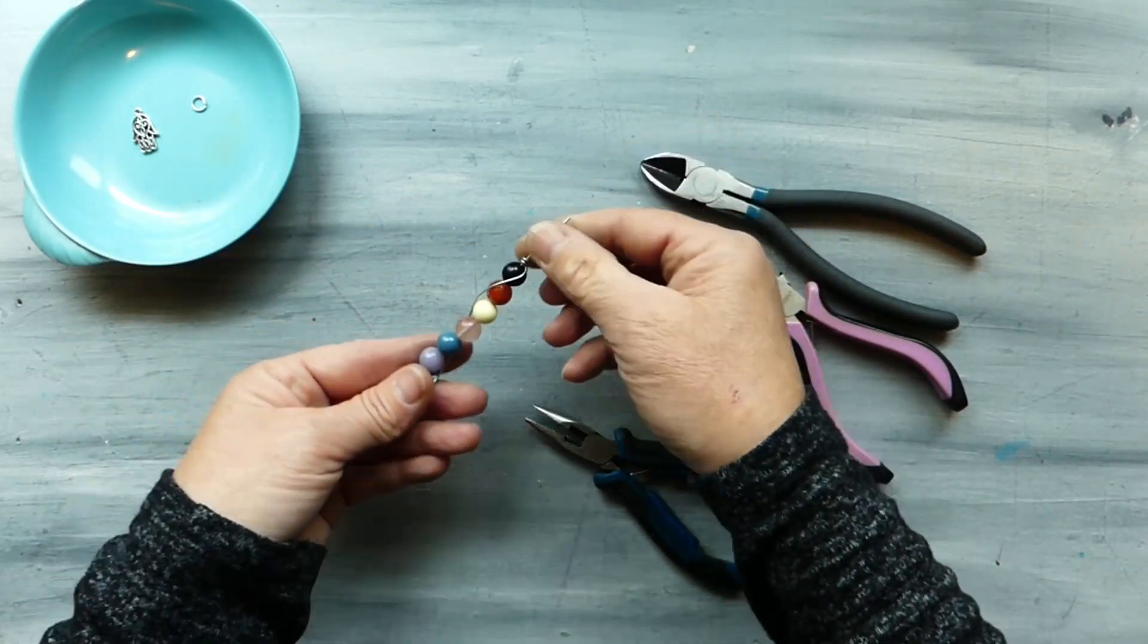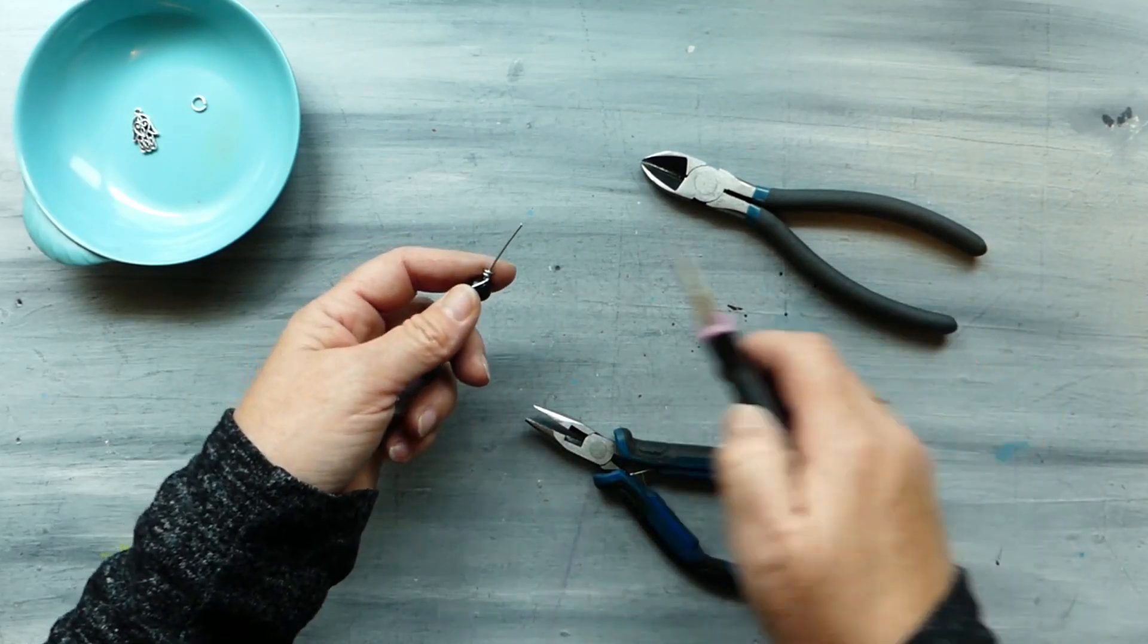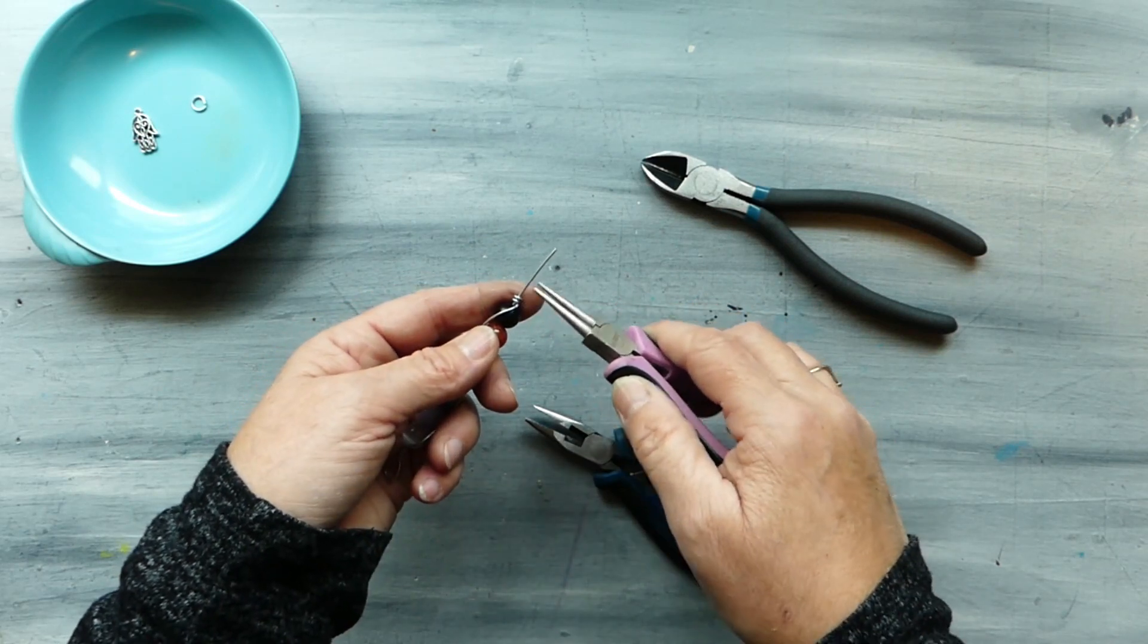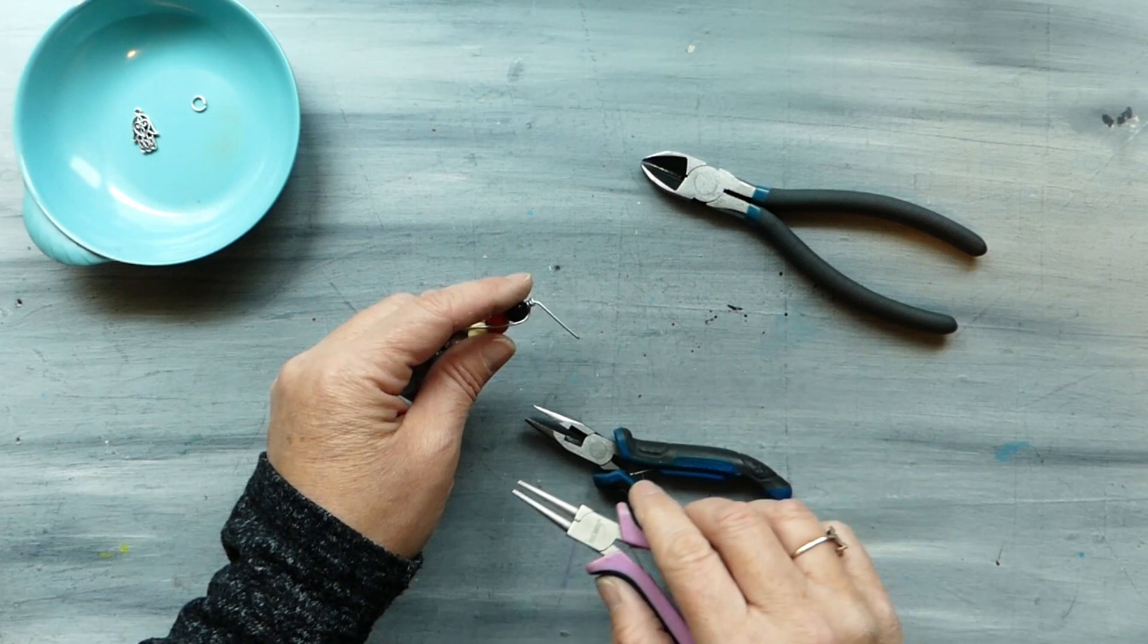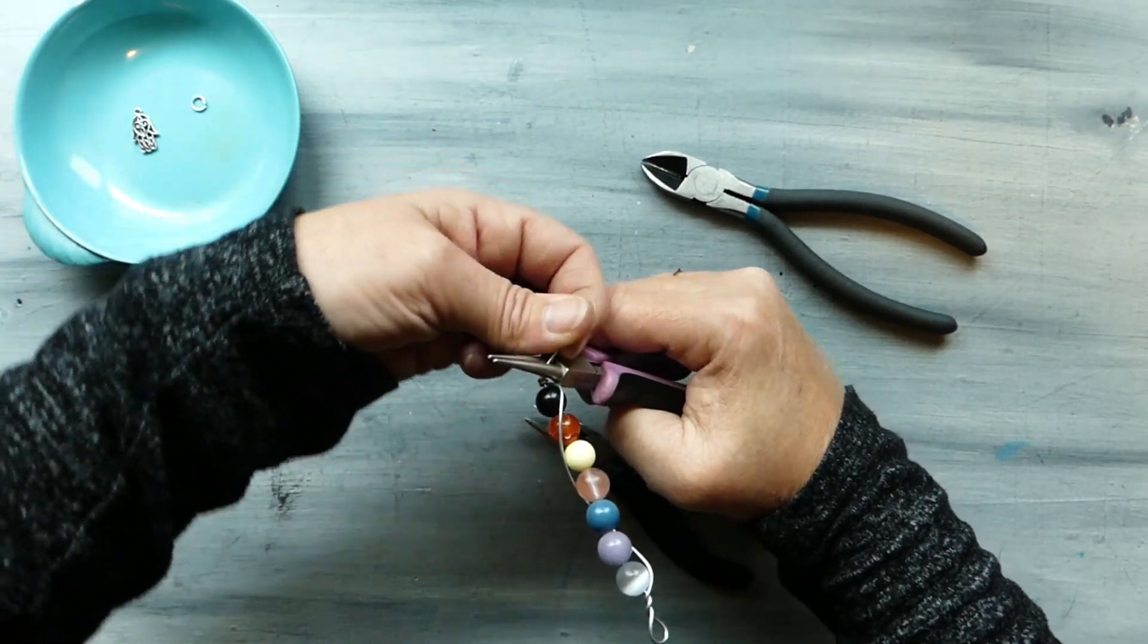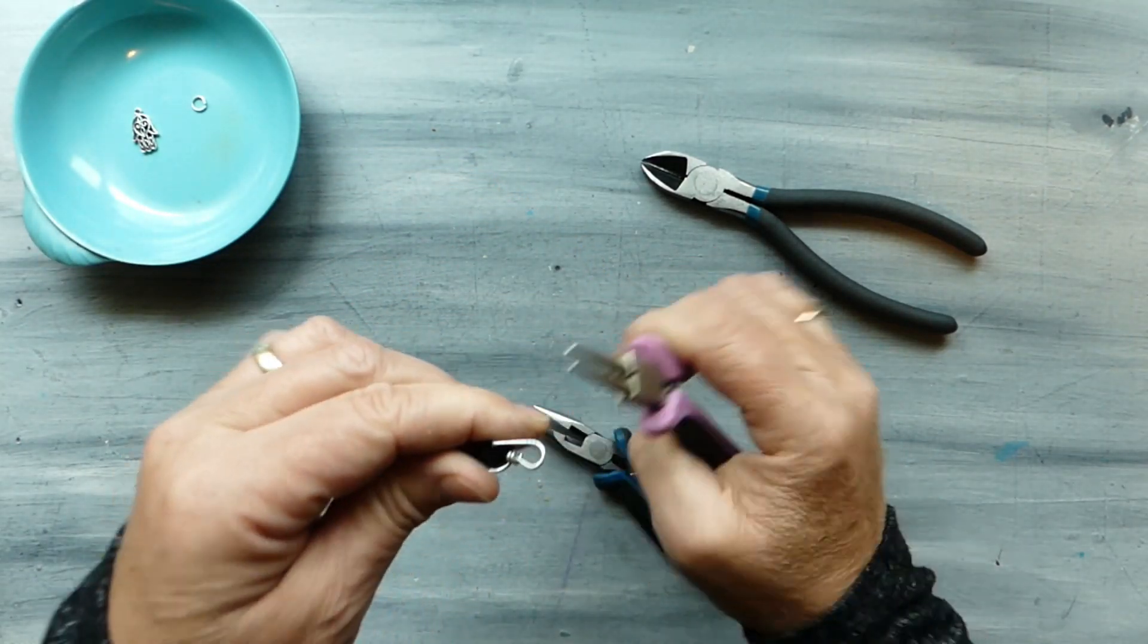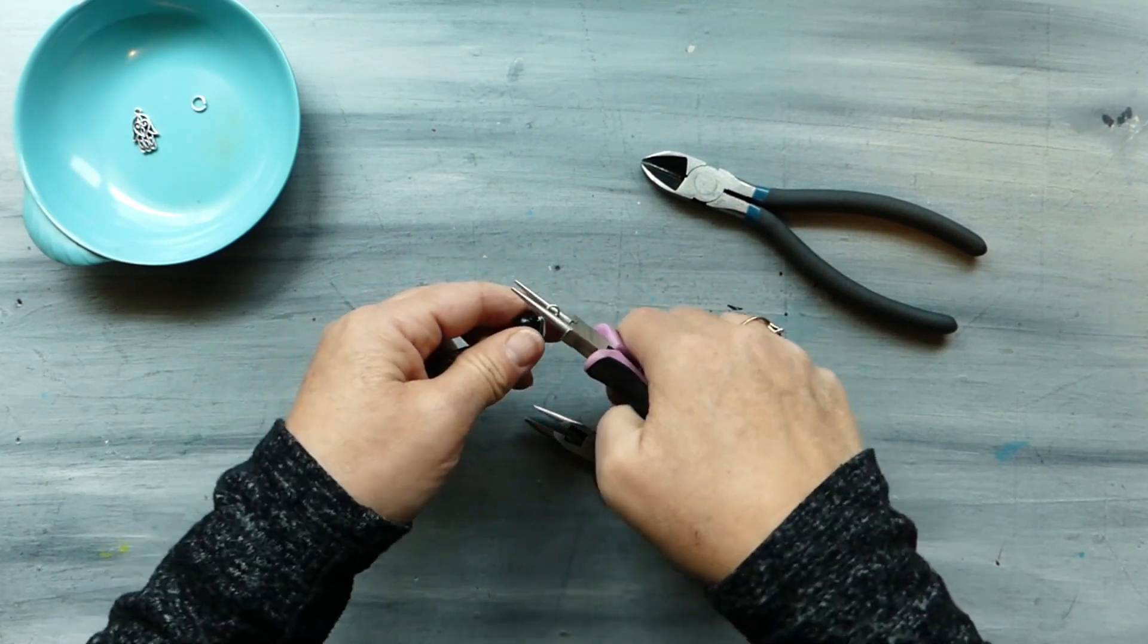Then we take our little bit that's protruding here and we grab it right up close against that bend, we give it a bit of a bend to the side and then repositioning our round pliers we are just going to bend that wire just to give us this little loop here.